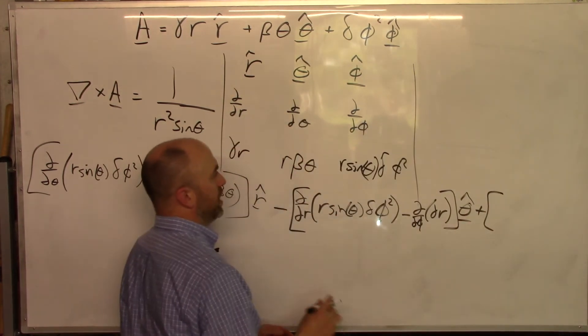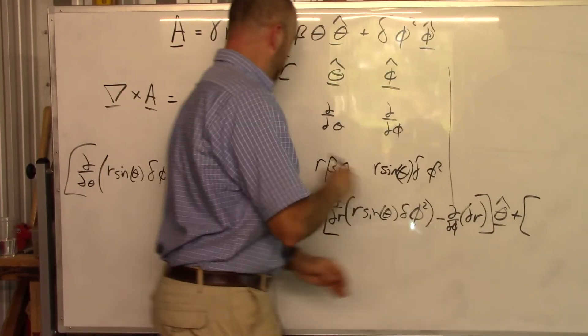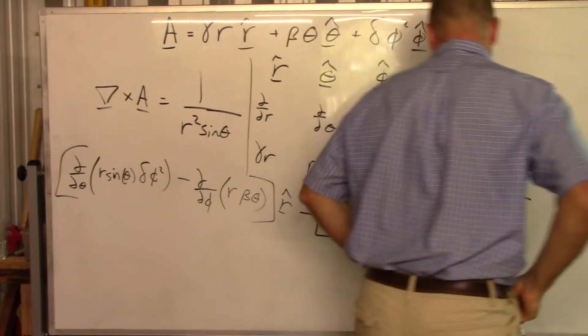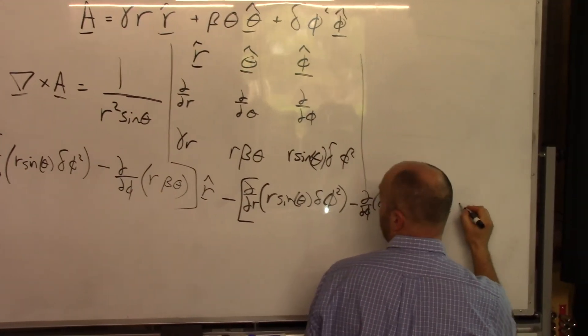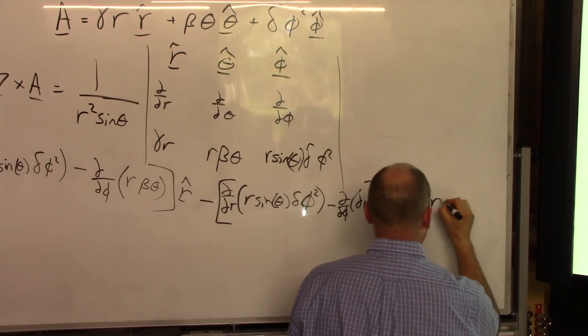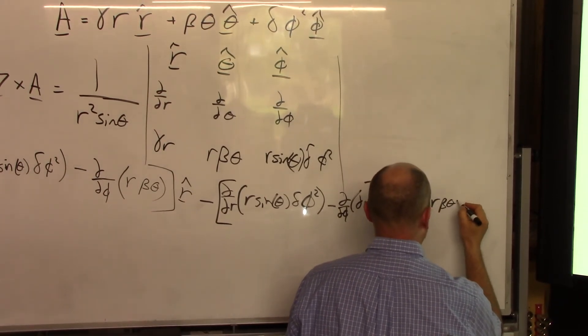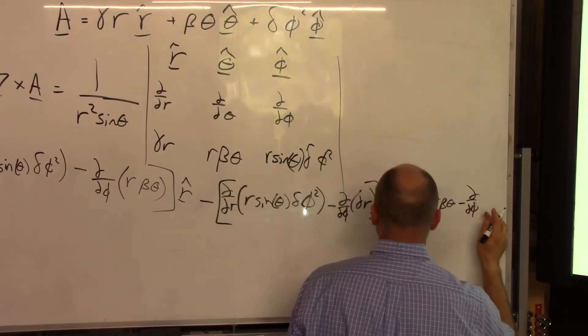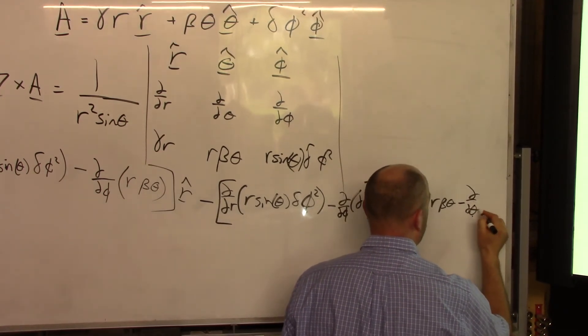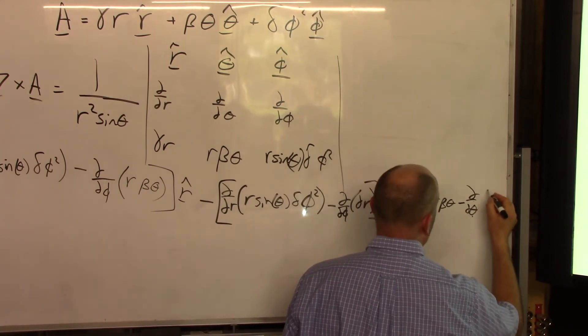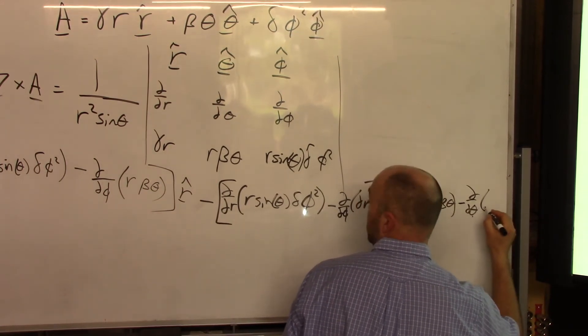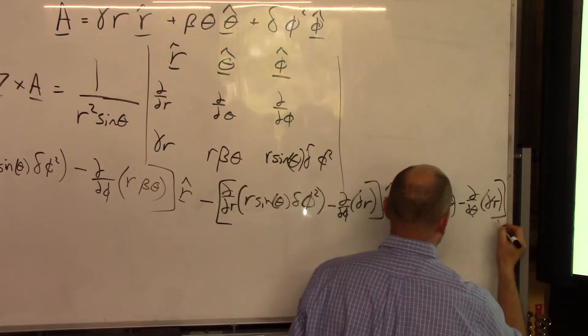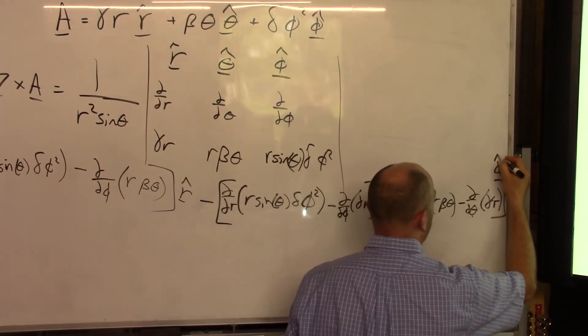And now we'll do the last piece. We're going to cover up this one over here and do this times this minus this times this. So it's going to be d by dr of r beta theta minus d by d phi. I'm sorry that's a theta d by d theta of gamma r. And that is in the phi-hat direction.